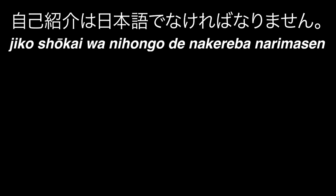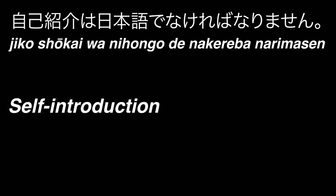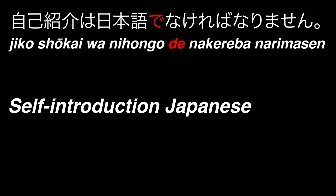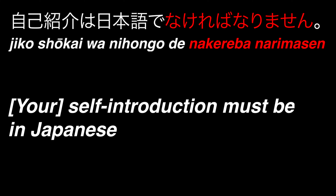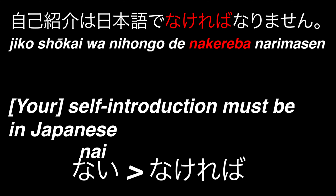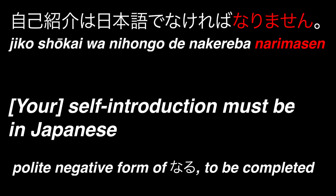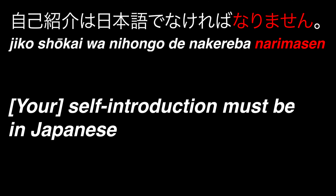Jiko shoukai wa nihongo de nakereba narimasen. Jiko shoukai means a self introduction — jiko means oneself, and shoukai means an introduction. This term is given the topic particle wa, as that's what's being talked about in the sentence. The particle de on nihongo, Japanese, means using or by, so you can translate it as in Japanese. Nakereba narimasen is an expression meaning it must or it has to be. Nakereba means if you don't and is the conditional form of the verb nai, meaning to not be. Narimasen is the polite negative form of the verb naru, which in this case means to be completed. So it literally means if you don't, that'll be no good. The whole sentence means: your self introduction must be in Japanese.